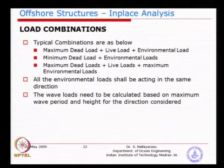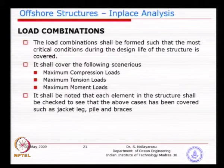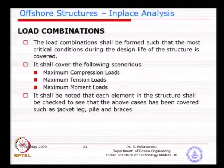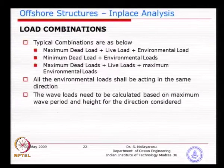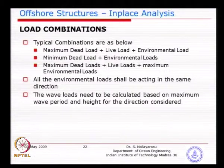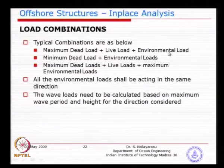You can easily see the purpose is maximizing compression for design of pile capacity and the corresponding columns. Tension loads could cause potential problems with pile capacity — the pile could actually come out. And moment for bending. For a typical example: maximum dead load plus live load plus environmental load on one leg could produce compression, while the other side could produce tension.